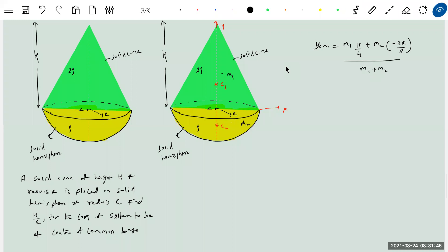Why negative sign here? Because the center of mass of solid hemisphere will lie below the origin, so minus 3R by 8 will come.